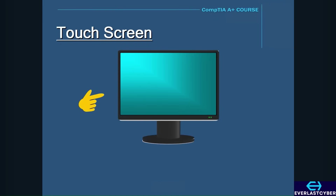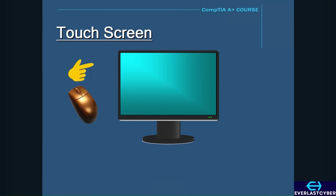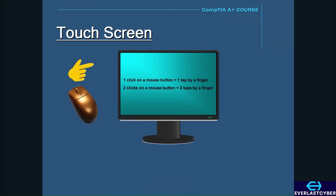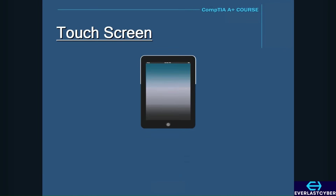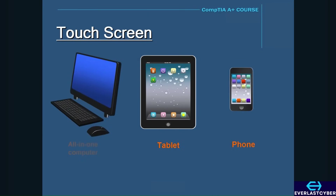A touchscreen is an LCD monitor with a built-in input detection system — a grid that senses a touch by a finger. It works the same way as using a mouse, but without the mouse itself, because you use your finger. One tap equals one mouse click, and two taps equal two clicks. Touchscreens are commonly used in all-in-one computers, tablets such as the iPad, and on phones with touchscreen technology.